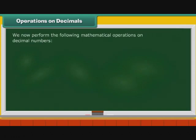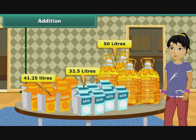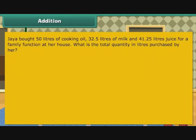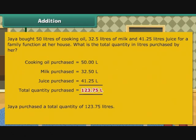We now perform the following mathematical operations on decimal numbers: addition, subtraction, multiplication, and division. Addition: Jaya bought 50 litres of cooking oil, 32.5 litres of milk and 41.25 litres of juice for a family function at her house. What is the total quantity in litres purchased by her? Cooking oil purchased is 50 litres, milk purchased is 32.50 litres, juice purchased is 41.25 litres. We add the three to get the total quantity purchased as 123.75 litres.